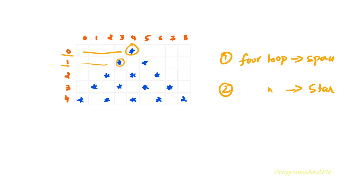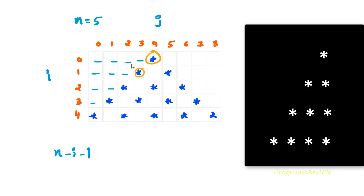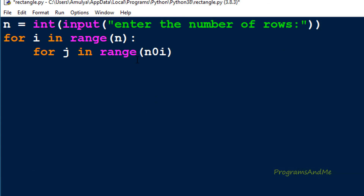Let's check how many spaces we want in each row. When n is 5: when i is 0 we want 4 spaces, when i is 1 we want 3 spaces, when i is 2 we want 2 spaces, when i is 3 we want 1 space, and when i is 4 we want 0 spaces. That's why we take the formula n minus i minus 1. For example when n is 5 and i is 0: 5 minus 0 minus 1 gives 4 spaces. When i is 1: 5 minus 1 minus 1 gives 3 spaces. So I will take n minus i minus 1 in the range for the space loop.